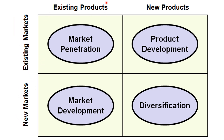Where we sell existing products in greater numbers in existing markets, we call that market penetration. When we take existing products and sell them in new markets, that's market development. Developing new products to sell in markets we already operate in is product development. And selling new products in new markets is called diversification.